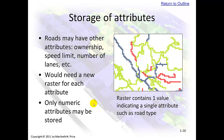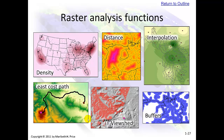Storing attributes. Roads may have other attributes: ownership, speed limit, number of lanes, etc. If this were a raster, you'd have to have a new raster for each attribute, and only numeric attributes may be stored. A raster contains one value indicating a single attribute such as road type. Raster analysis functions include density, distance, interpolation, and buffers — we'll actually do buffers on some vectors in this course. View shed analysis highlights everything that can be seen from a point. Least cost path indicates the least expensive route in terms of resources.